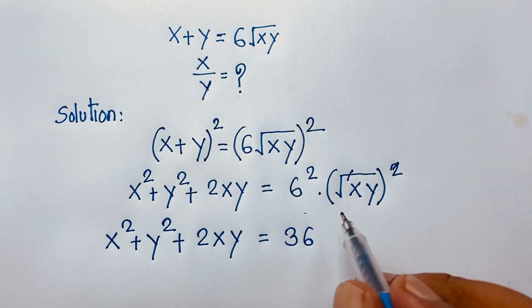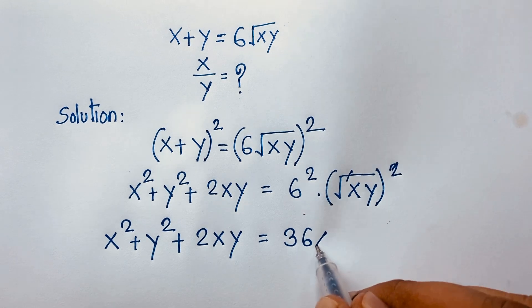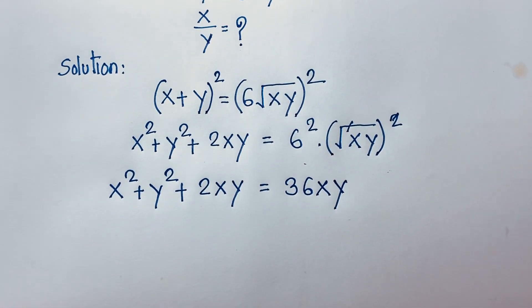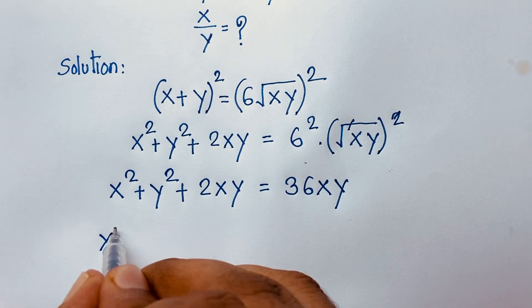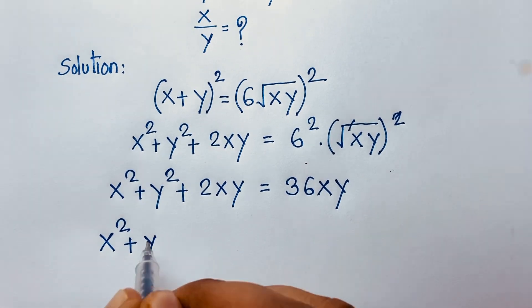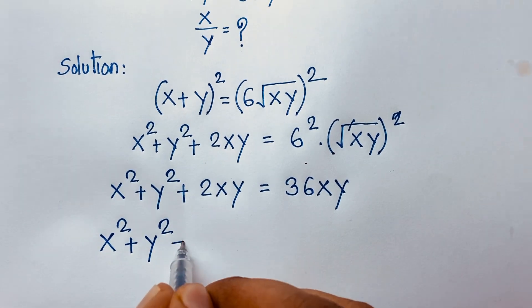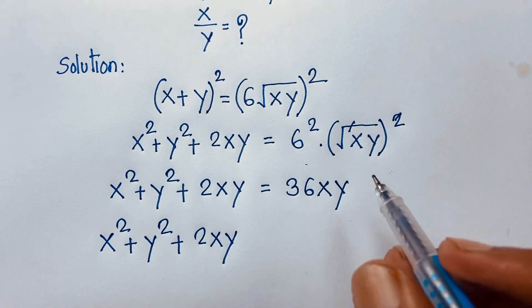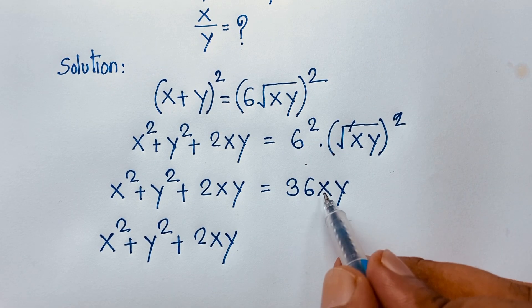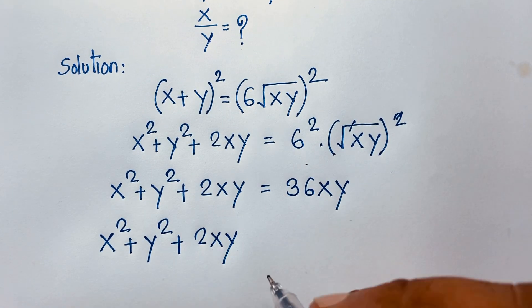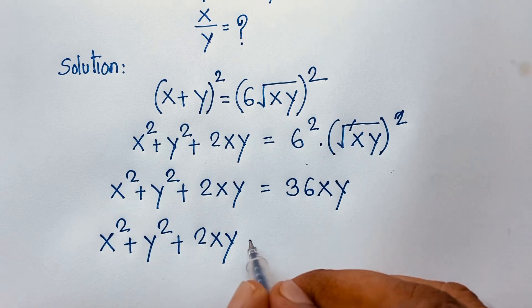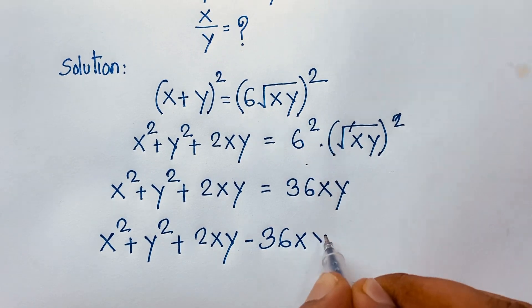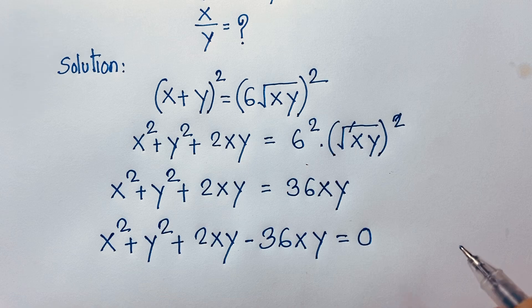So we have x² + y² + 2xy = 36xy. Moving 36xy to the left side, it becomes negative: x² + y² + 2xy minus 36xy equals 0.